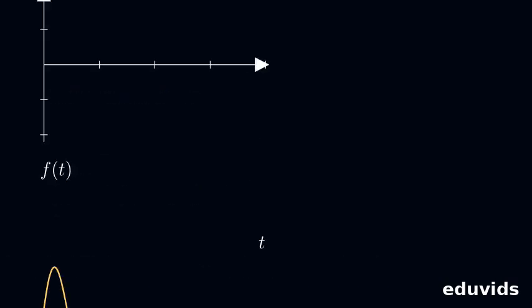Imagine turning a hard puzzle into an easy one by looking at it differently. The Laplace transform converts a function of time, f of t, into a function of a complex variable, s. Think of it as a math lens revealing complex time behaviors as simpler algebra.